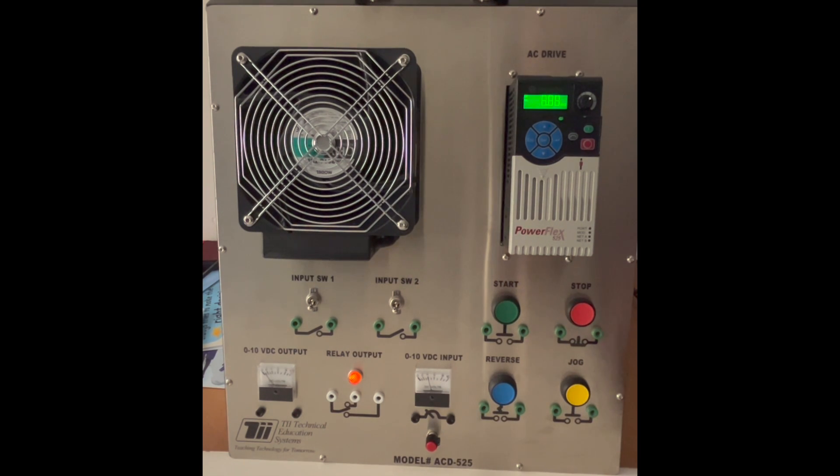This was just a quick tutorial on how to set the parameters in the PowerFlex 525 to be able to control the speed of the motor via the frequency using a potentiometer. As always I hope this video helped you out and if it did please hit the like and subscribe button.